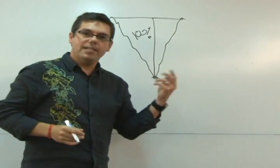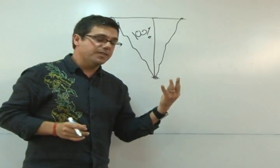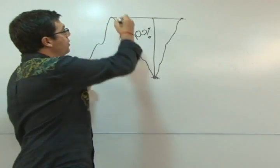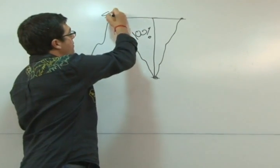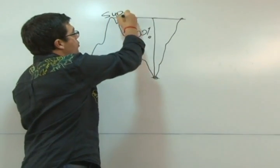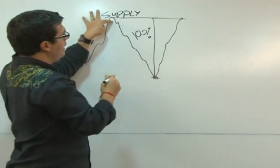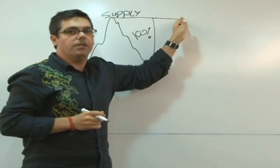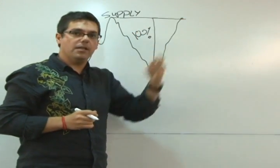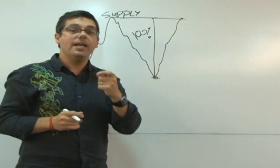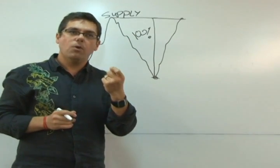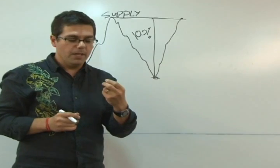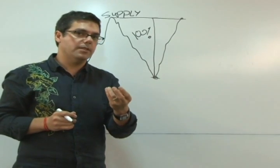And now I'll ask myself: if I am expecting some selling pressure due to the prior supply — which was right here — so if this was a supply level, I am thinking sellers are likely to come in to basically sell their shares. Well, if that is the case, my next question is: how much of that selling am I expecting?